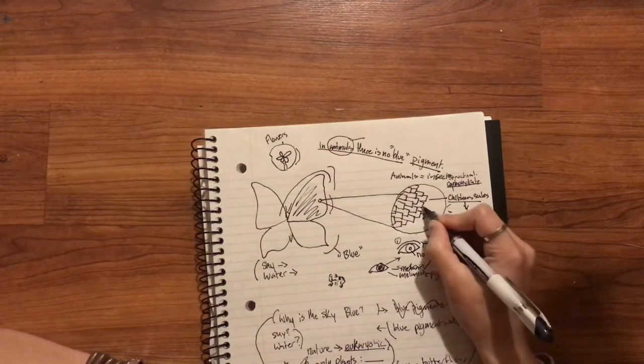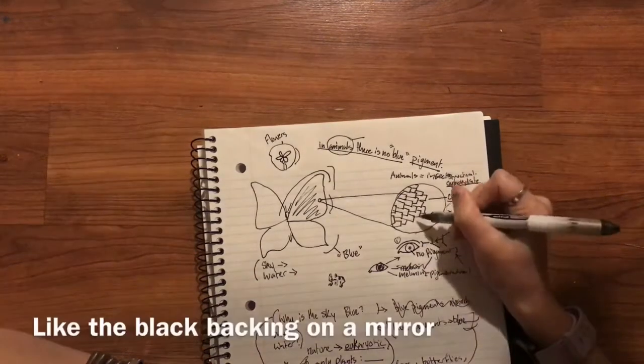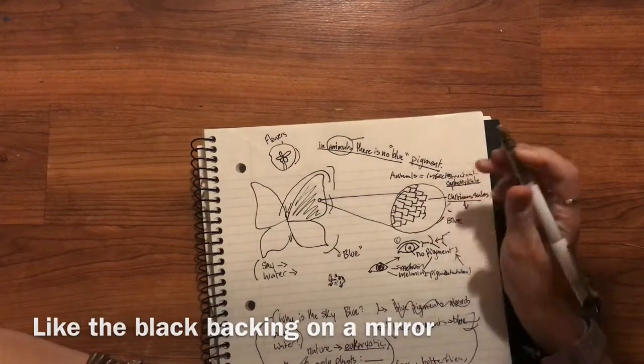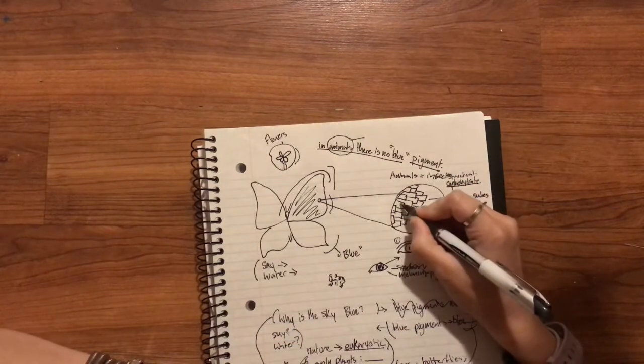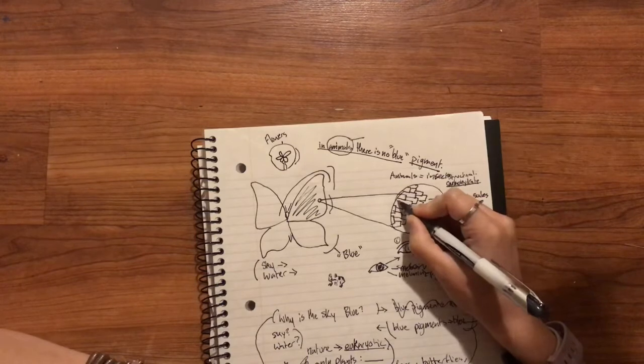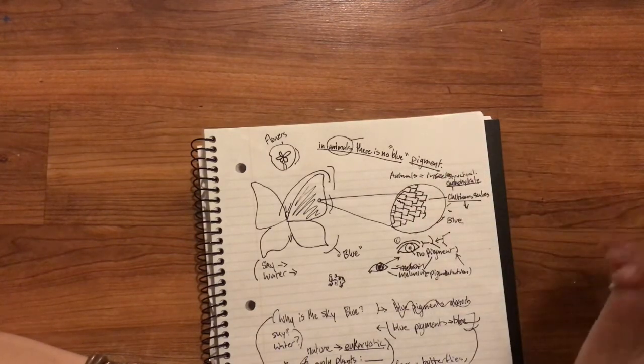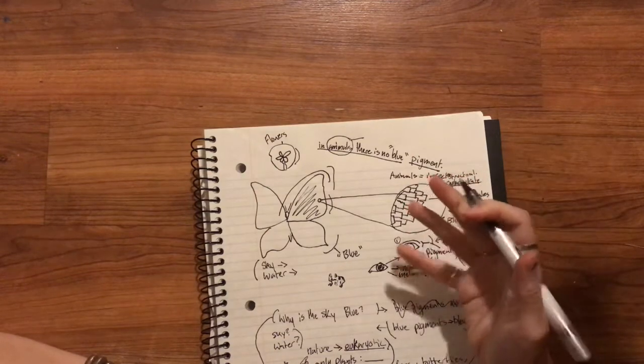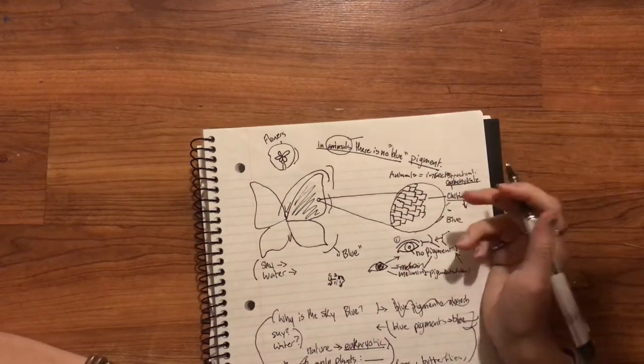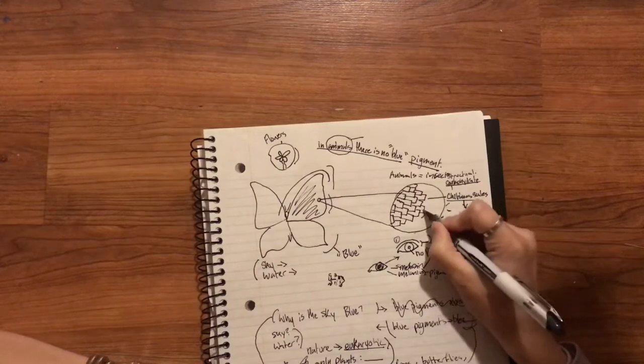So these chitinous scales usually have sort of a black or brown base behind them and clear, basically, flakes where light is able to refract through them and come back as blue.